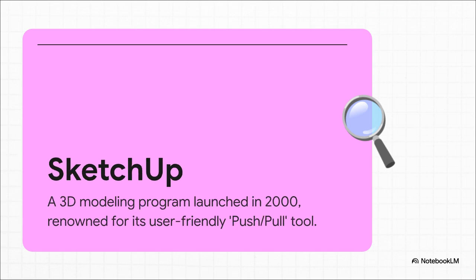And then in 2000, its challenger, SketchUp, entered the scene. The big thing that made SketchUp famous is just how incredibly easy it is to use. It was designed from day one to just make sense. It's got that iconic push/pull tool that literally lets you turn any flat shape into a 3D object with a single click. Because of that, it's become a massive favorite for architects, interior designers, and really anyone who just needs to get ideas out of their head and into 3D fast.